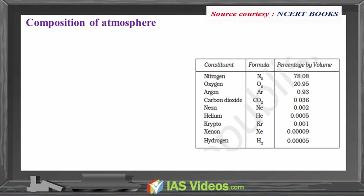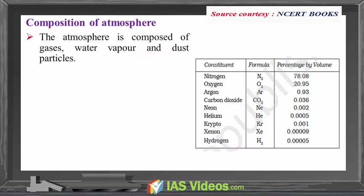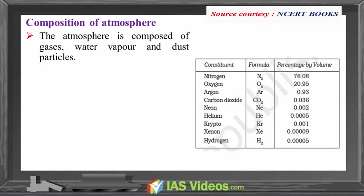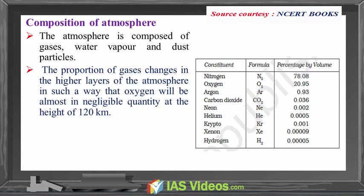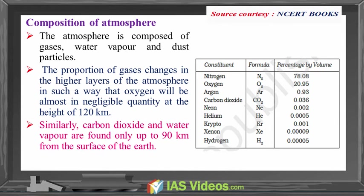The atmosphere is composed of gases, water vapour and dust particles. The proportion of gases changes in the higher layers of the atmosphere in such a way that oxygen will be almost in negligible quantity at a height of 120 km. Similarly, carbon dioxide and water vapour are found only up to 90 km from the surface of the earth.